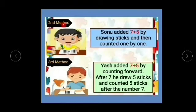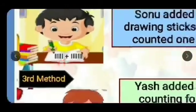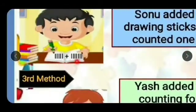Now look at the second method. This boy is Sonu. Sonu added 7 plus 5 by drawing sticks and then counted 1 by 1. So first he drew how many sticks? 7. Then he drew 5 sticks. After that he counted sticks 1 by 1 from 1 to 12.